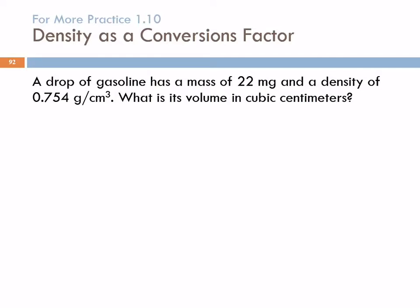A drop of gasoline has a mass of 22 milligrams and a density of 0.754 grams per cubic centimeter. What is its volume in cubic centimeters? So this one isn't as crazy as the last one, but there's still some words in there. So we've read the words, and now we're going to write down the numbers.